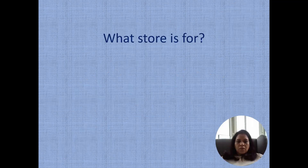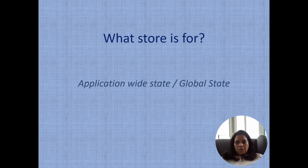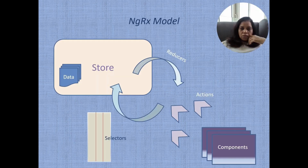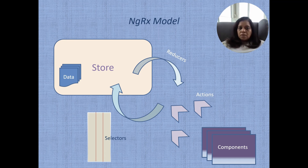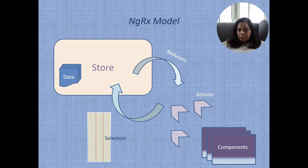What is the NGRX store? It represents the application-wide state, or global state, of our application. The store represents the application-wide data. Reducers are pure functions. They take an initial state and a callback function. The callback function holds the logic for how the data should be updated. Reducers are the only way through which the store can be accessed, or the application data can be accessed.